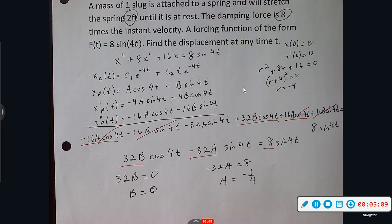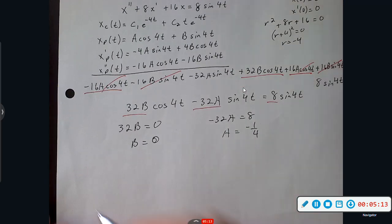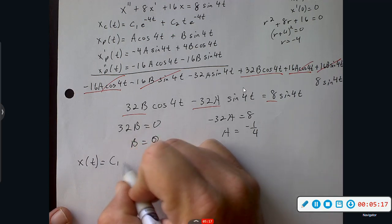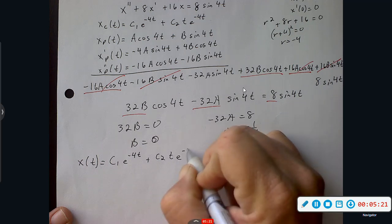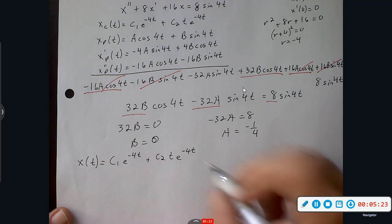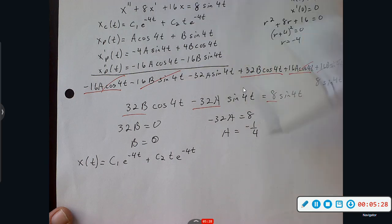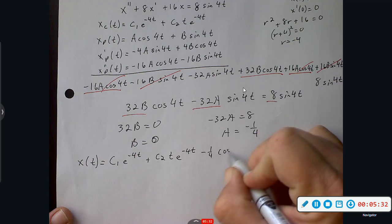Okay, so now we can finally write a version of our function that's modeling our displacement. C1 e to the negative 4T plus C2 T e to the negative 4T, and then plus our Xp(T). Well, B goes away, so it's just the A, negative one fourth cosine 4T.